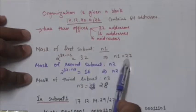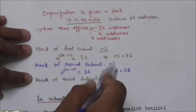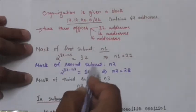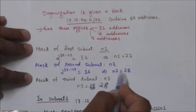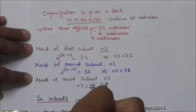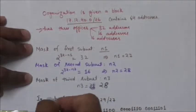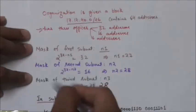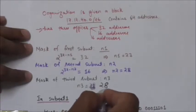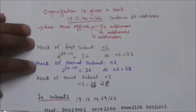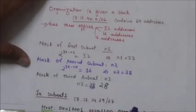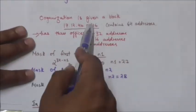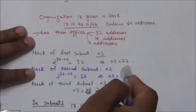Suppose the mask of the second subnet is n2. This subnet needs 16 addresses, so 2 raised to the power of (32 minus n2) must equal 16. Therefore, n2 equals 28. The mask of the second subnet is /28. For the third subnet with mask n3, it also needs 16 addresses, so n3 equals 28. In summary, the organization's mask is /26, and the three subnet masks are /27, /28, and /28.